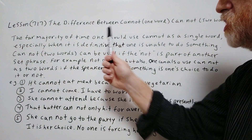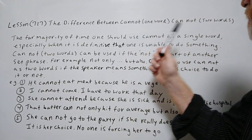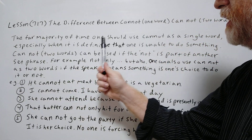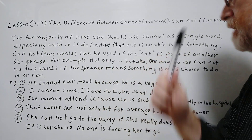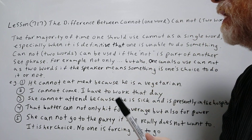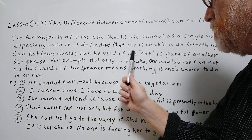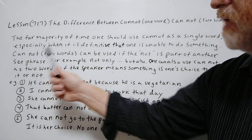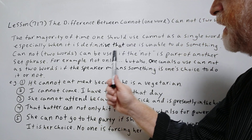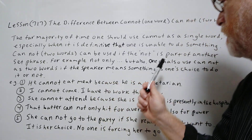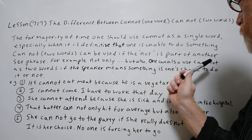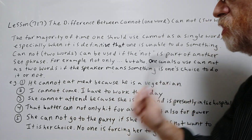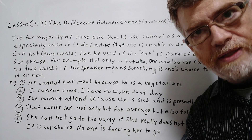The far majority of time one should use 'cannot' as a single word, especially when it is definitive that one is unable to do something. 'Can not' as two words can be used if the 'not' is part of another set phrase — for example, 'not only but also.' One can also use 'can not' as two words if the speaker means something is one's choice to do or not.